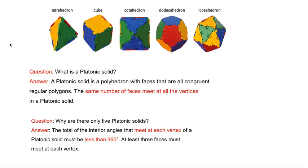First question is, what is a Platonic solid? Well, the definition is: a Platonic solid is a polyhedron with faces that are all congruent. Congruent means the same, okay? All congruent, regular polygons. The same number of faces meet at all the vertices in a Platonic solid.